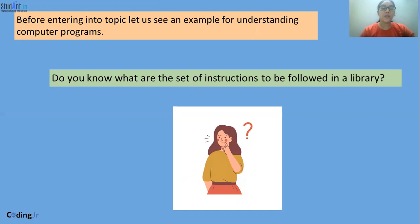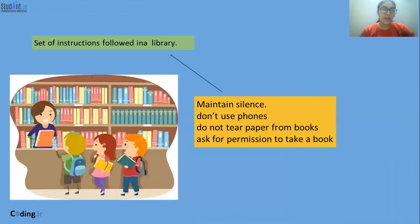So what did you observe there? There are a set of rules and regulations that one must follow. Especially in a library, you must particularly follow these rules. What are the instructions or regulations? First thing is we have to maintain silence, we shouldn't use phones, we shouldn't tear any paper from the books we use, and while we are taking books from the library we should also ask permission.